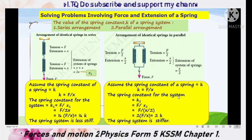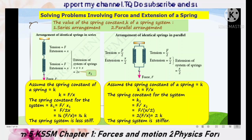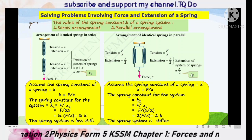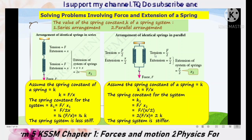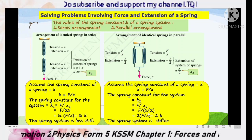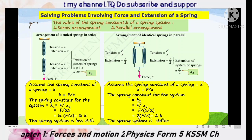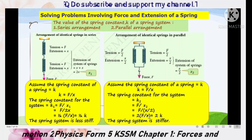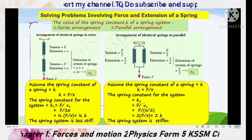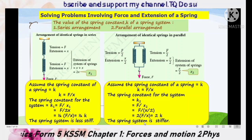The spring constant for the parallel system, let's call it K₂, equals F divided by the total extension X₂, where X₂ equals X/2. Substituting, K₂ equals F divided by (X/2), which rearranges to 2 times (F/X). Since F/X equals K for one single spring, K₂ equals 2K. So the parallel spring system is stiffer.